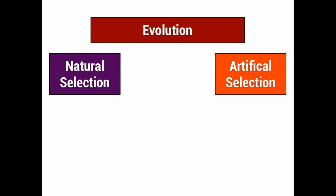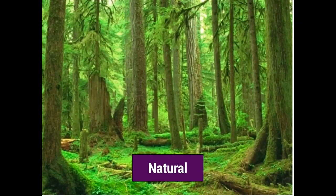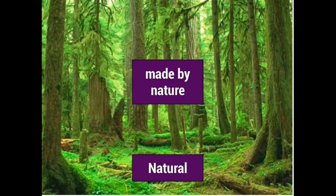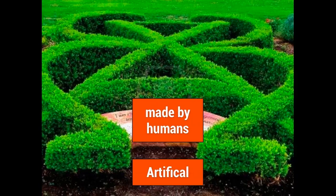When talking about the difference between natural selection and artificial selection, it's important to know the difference between the two words natural and artificial. Natural is something that is made by nature, such as this forest, whereas artificial is something made by humans, such as this nicely trimmed hedge.